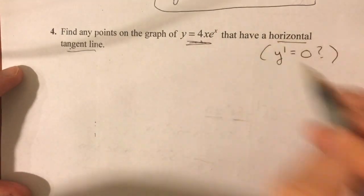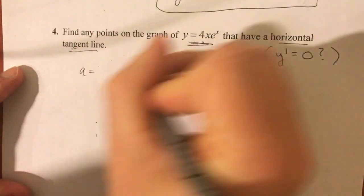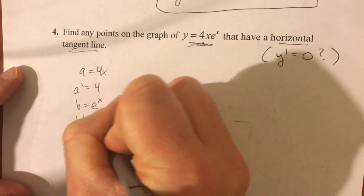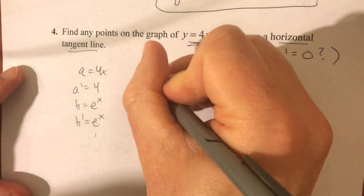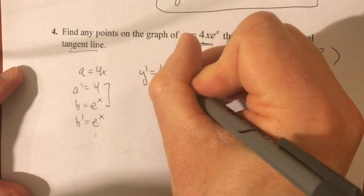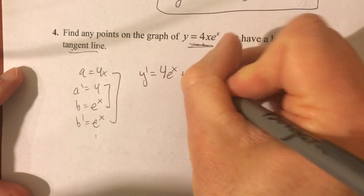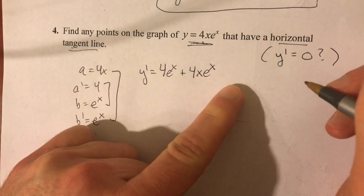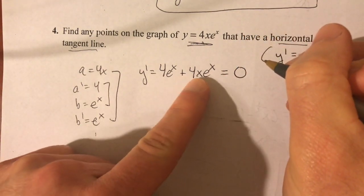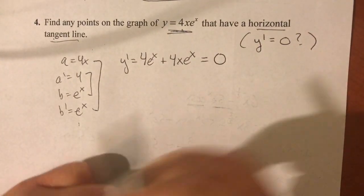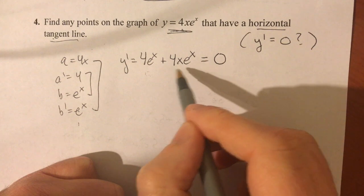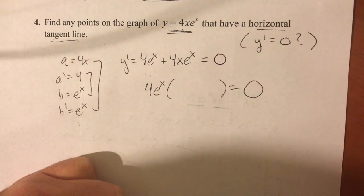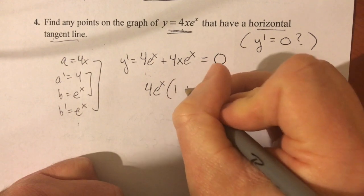And yes, that is another product rule here. So a is 4x. a prime is 4. b is e to the x. b prime is still e to the x. y prime, the derivative, is product of the inners, 4 e to the x, plus product of the outers, 4 x e to the x. Now that is your derivative. And I want to know what x value gives you a value of 0. So we set it equal to 0. And now we're solving this equation. So here's where your algebra skills come in, folks. And to solve this equation, we're going to factor this. I can take out 4 e to the x.